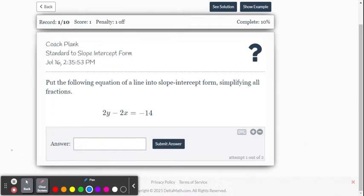So we're given the equation 2y minus 2x equals negative 14. So let's remember, slope-intercept form is y equals mx plus b, where m is the slope value and b is the y-intercept. So you just got to get y equals.